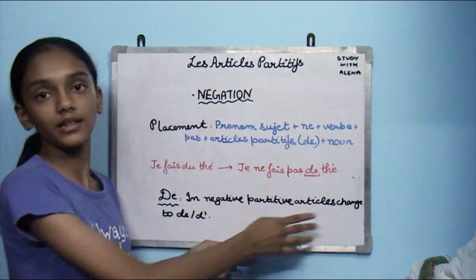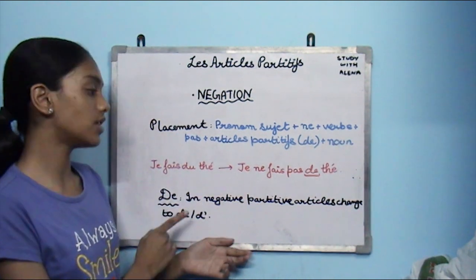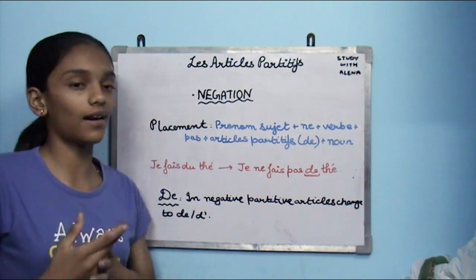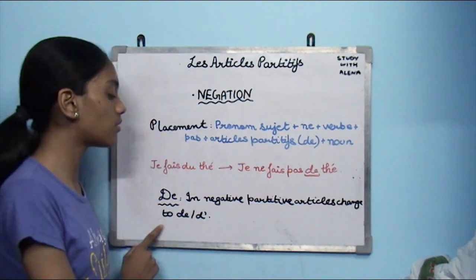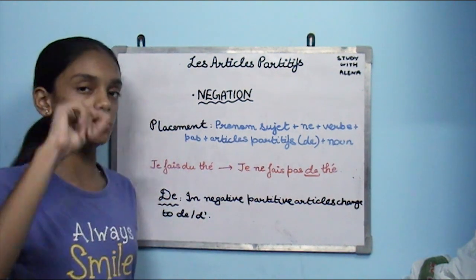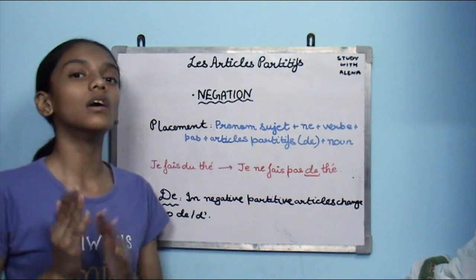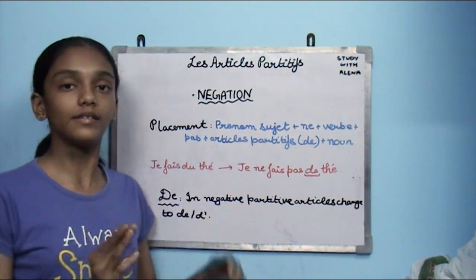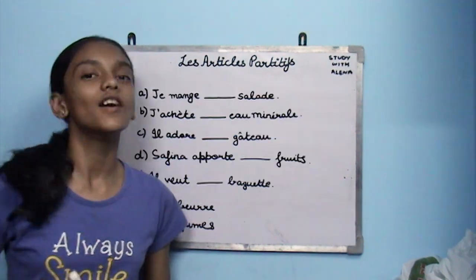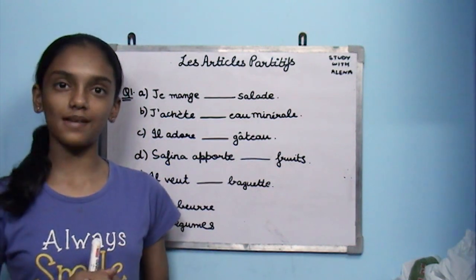In negative partitive articles, we change du, de la, etc. to de or d' — d' with an apostrophe whenever there is a vowel in front of it.